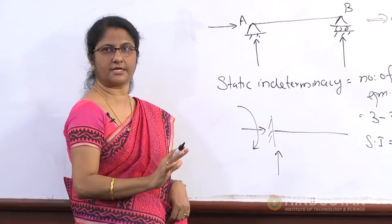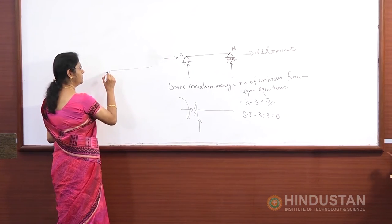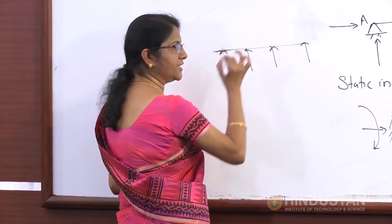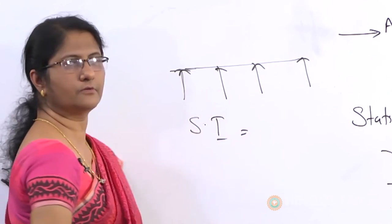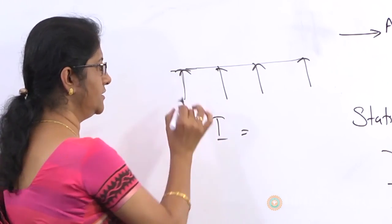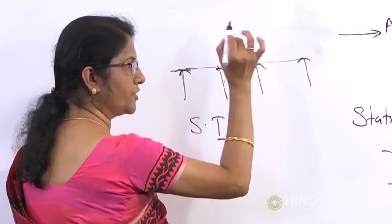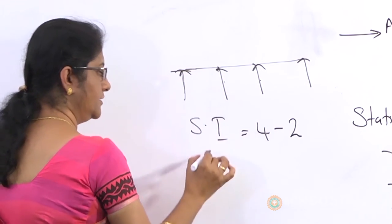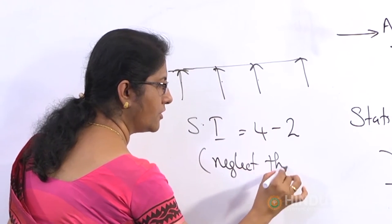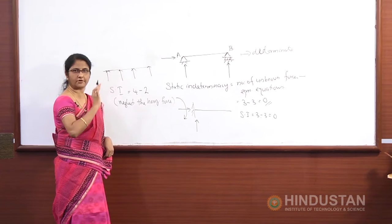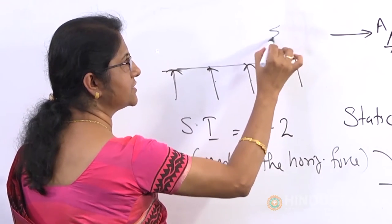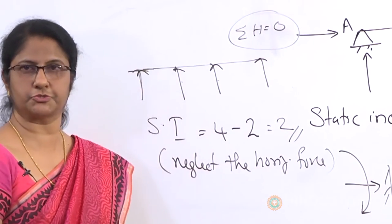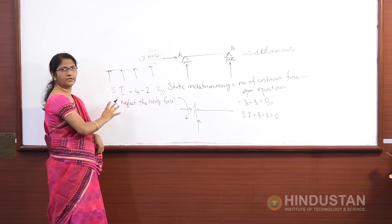Other than these two, all other structures are indeterminate. For example, a continuous beam — a beam supported on many supports — is an indeterminate structure. If there are four supports, we have four unknown reactions. We take two equilibrium equations because we neglect horizontal forces, since there is no external horizontal force. So the static indeterminacy is four minus two equals two. This is how we find out whether a structure is determinate or indeterminate.